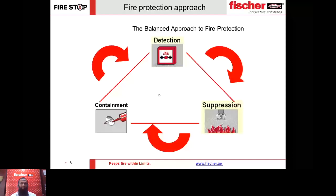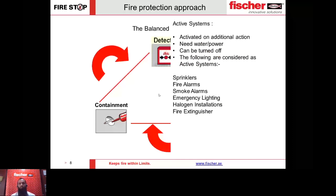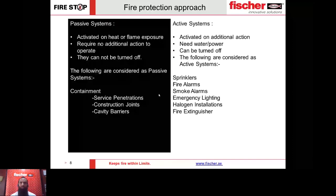Once fire is detected, we want suppression systems to activate to reduce the impact. However, there is a third pillar which most of us miss — containment, which is part of passive fire protection. The detection system and the sprinkler system are called active systems — these are plan A in fire protection. The moment there is fire, they get activated; they need water, power, and continuous maintenance, and can be turned off.